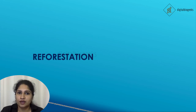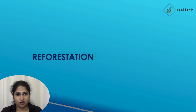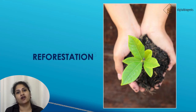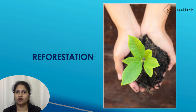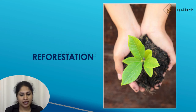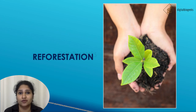Now we understand deforestation and its after-effects. The one and only solution for deforestation is reforestation. Reforestation is the restocking of forest areas by planting new trees. Reforestation can also happen naturally — if we keep a deforested area undisturbed for a long time it can re-establish trees by itself. We have done enough damage to the forest; if we want to rectify this, we have to plant new trees.